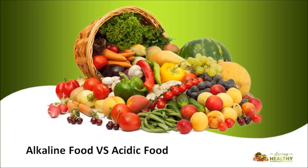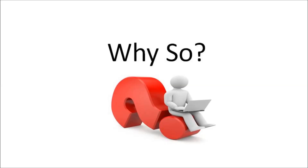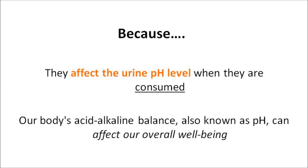In this video, we're going to talk about alkaline foods versus acidic foods. Before going into detail, you have to understand that food can be classified into two groups: the acidic food group and the alkaline food group. The question is, why are these foods categorized as such? The answer is because they affect the urine pH level when they're consumed.